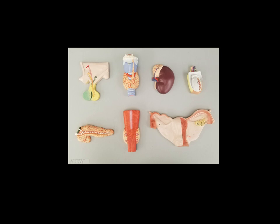Next, this is the larynx and trachea. This structure here is the thyroid gland. We can see the lobes on each side with the isthmus connecting them. Below that, this is the esophagus, and we can see a little bit of that thyroid gland, but we can also see those nodules which are the parathyroid glands.